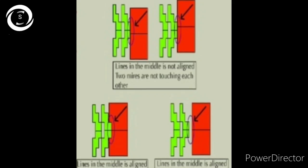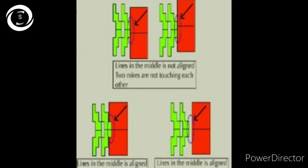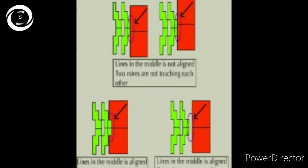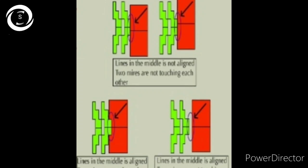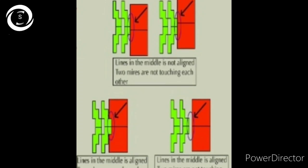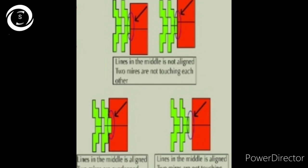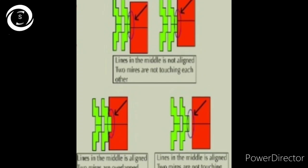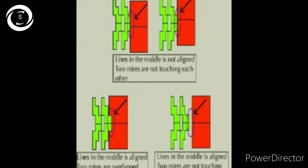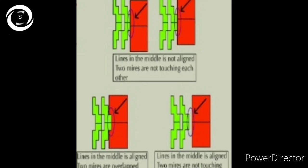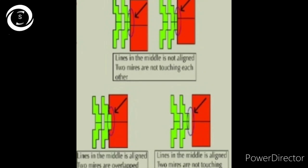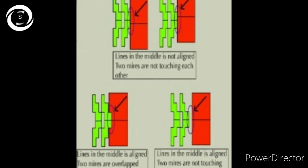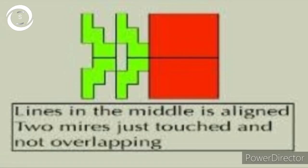In the above image, you can see the central line is not properly aligned, which will give you a false reading. If the mires are not touching each other, it will give you false readings. If there is a space between the two mires—rectangle and steps—it will give false readings. If there is overlapping of the mires, that will also give false readings. There should be no space, no overlapping, and the line of both mires should be continuous to get correct readings.